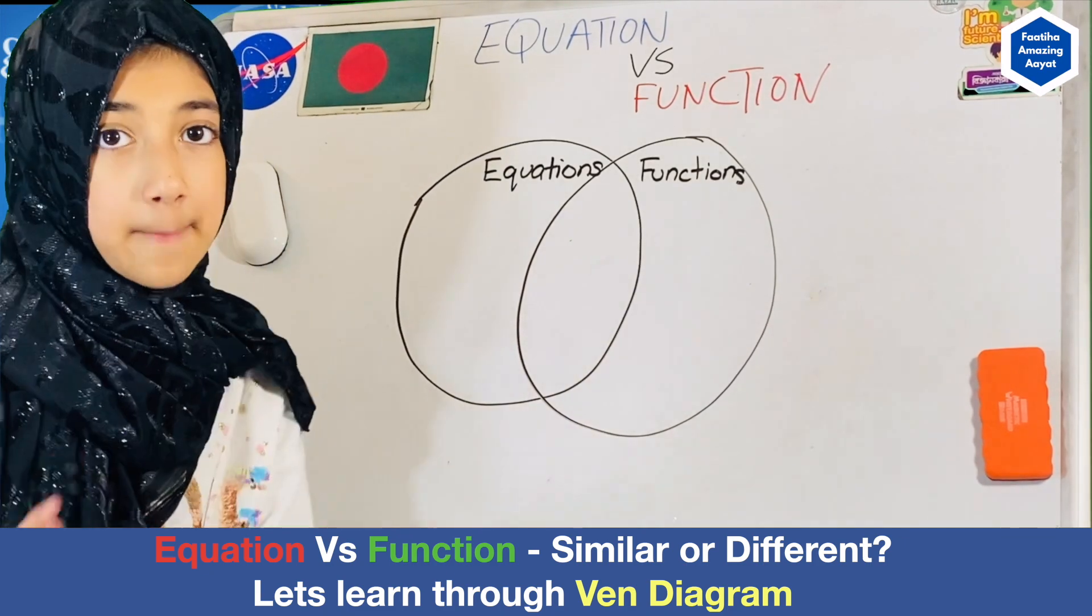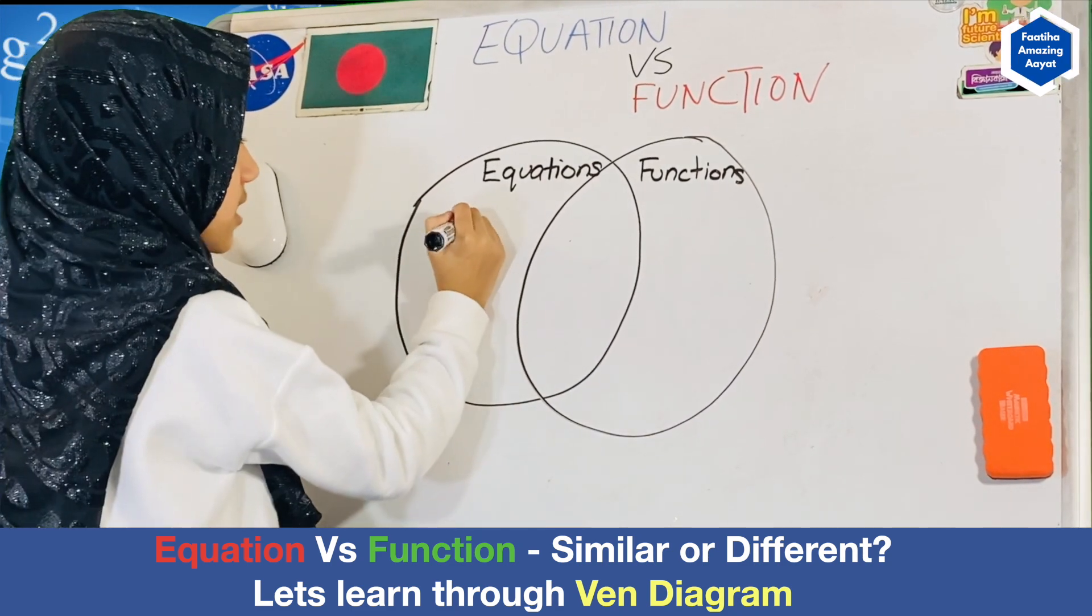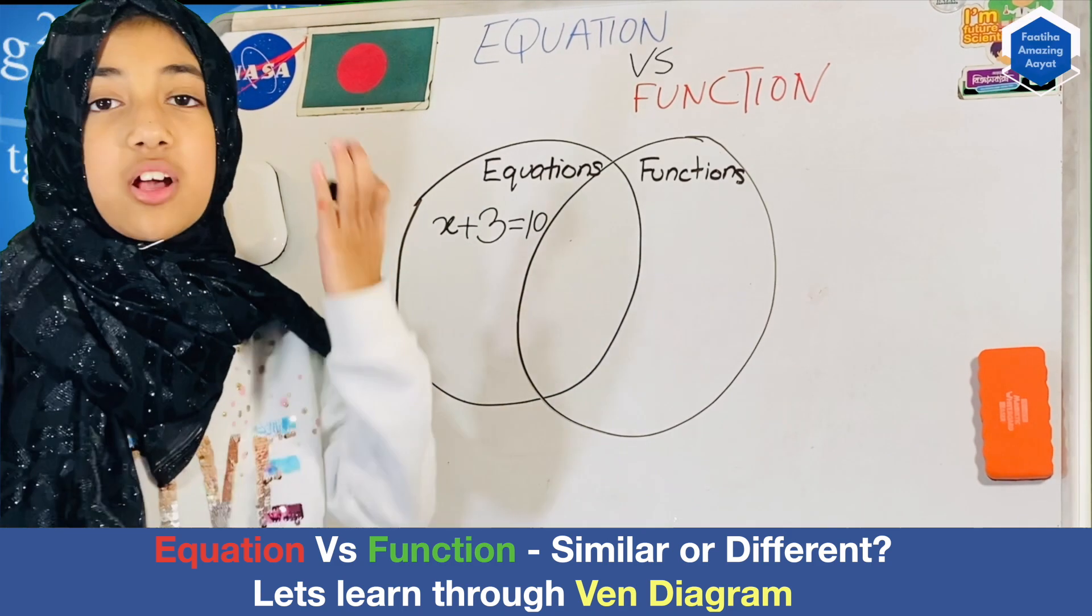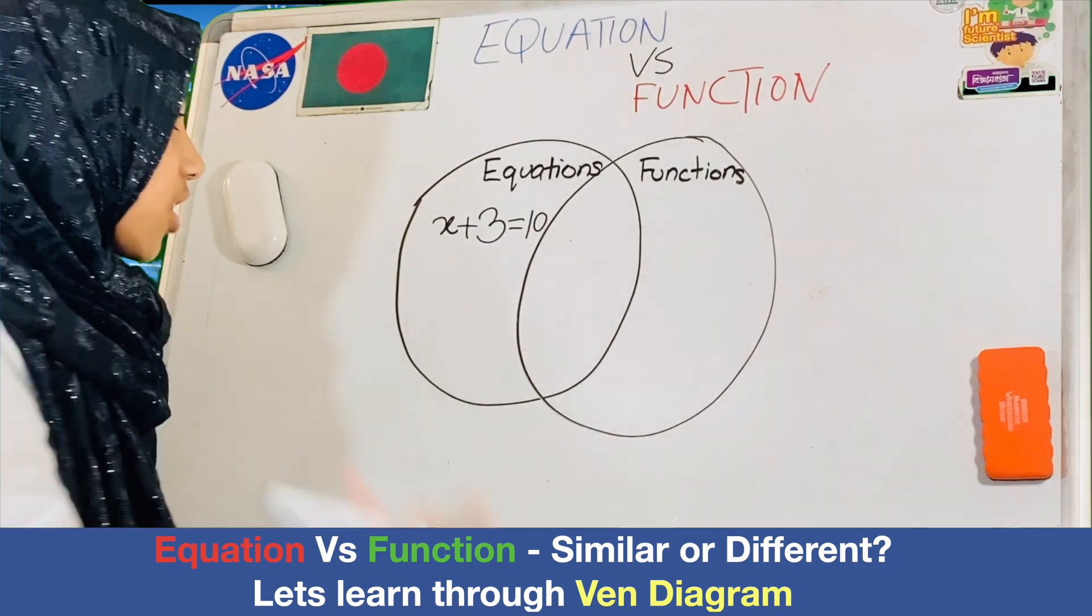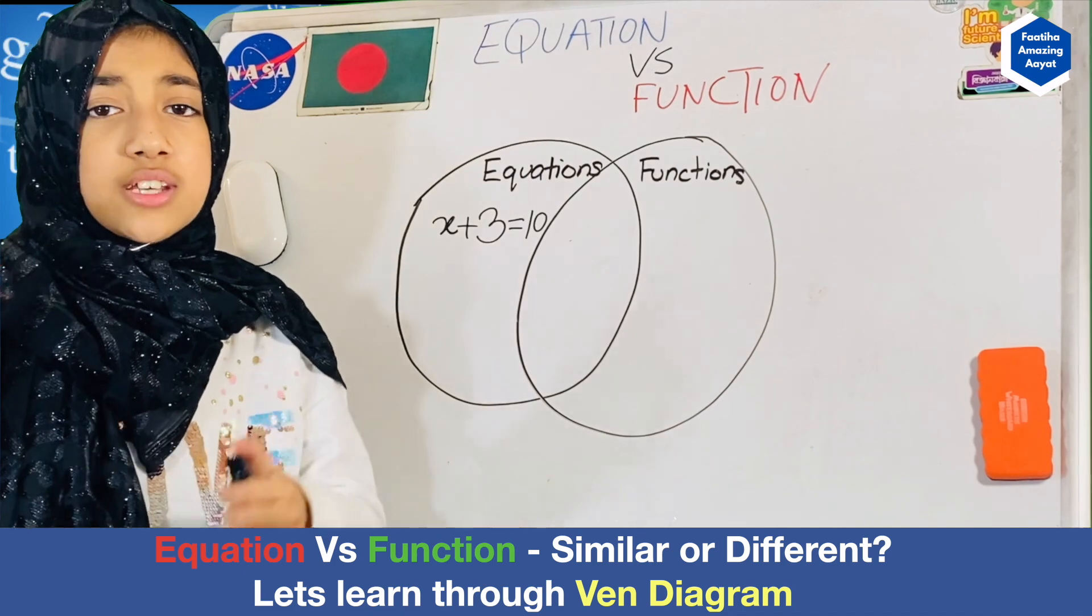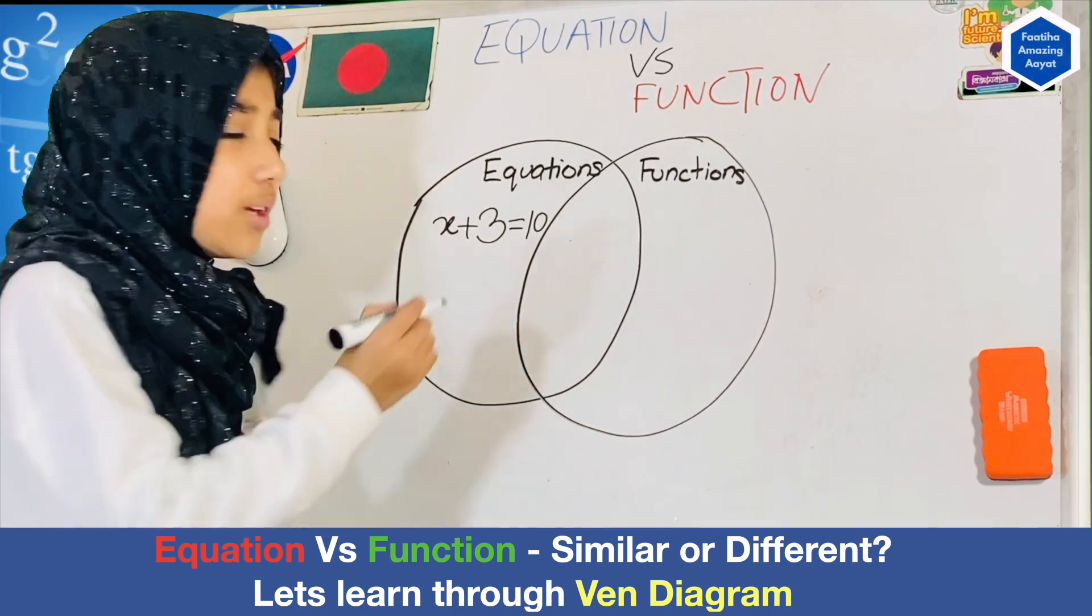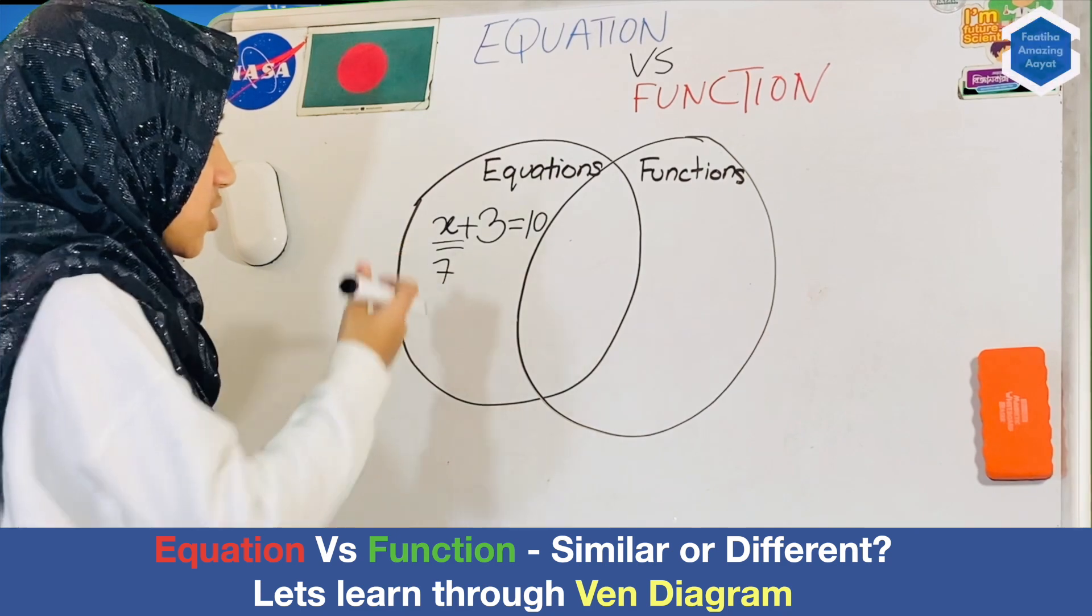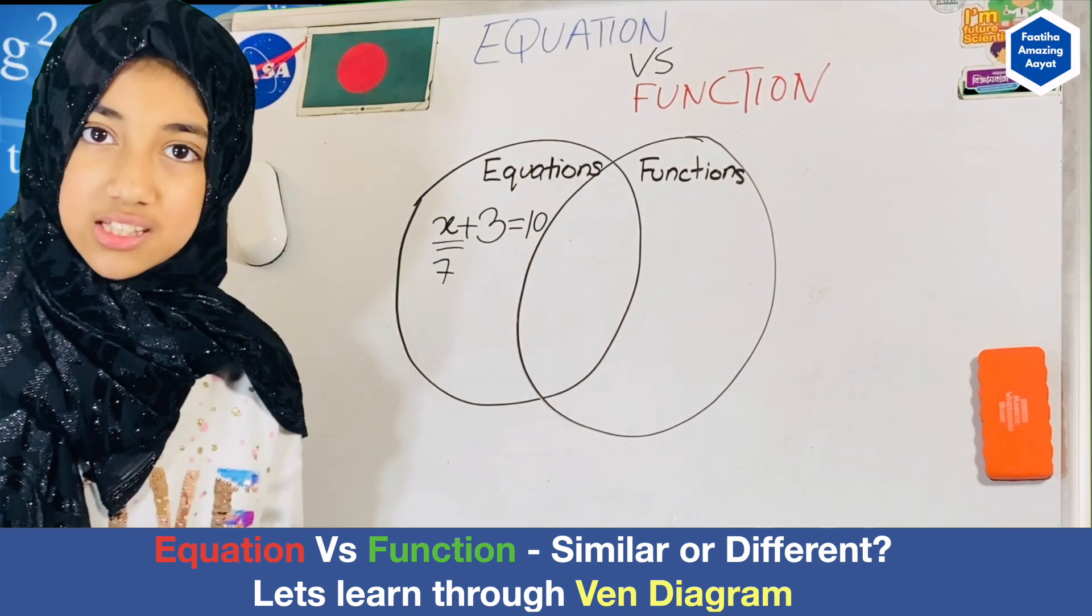The equations, a super simple example is, let's say, the variable x plus 3 is equal to 10. We all obviously know that x would be 7, because 7 plus 3 is 10. Now you might ask, why isn't this a function? It's not a function because a function means that you put an input and you keep putting an input to get the output until you reach your wanted output. But here, it's only one number, which is 7. You don't have to try again and again. Nothing plus 3 is equals to 10 except for 7, which is why this is not a function.